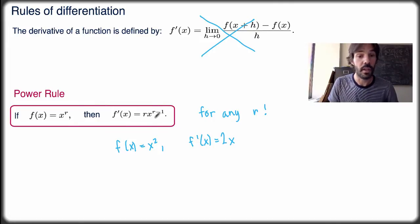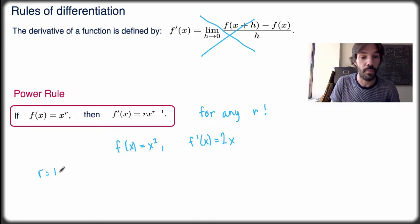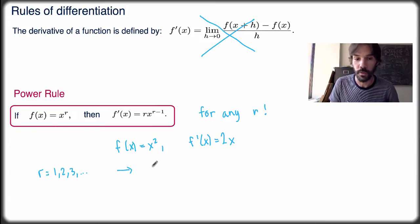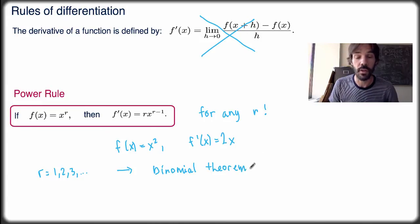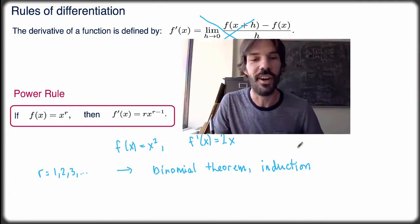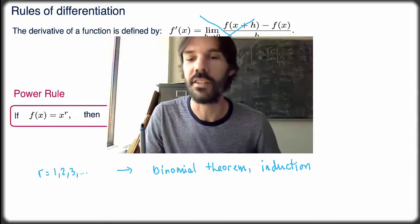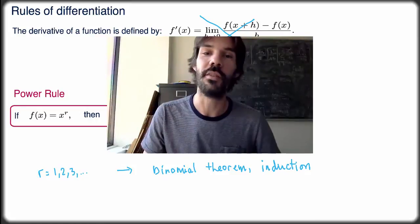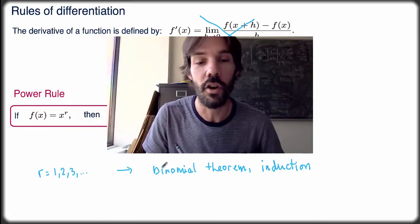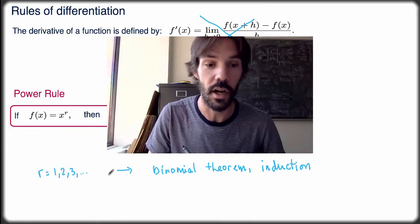This is a very powerful rule. You can prove it from the definition of the derivative. For r a positive integer, the proof can be done using the binomial theorem — that's in the textbook — or by a proof by induction. Induction proofs are really cool, so it's a good exercise to try. For r a negative integer, such as minus 1, minus 2, and so on, you can also prove it, but the proof is slightly different and requires something called the quotient rule, which we'll see very soon.